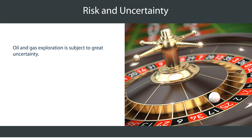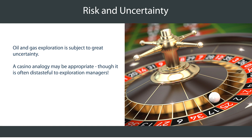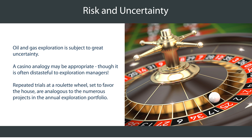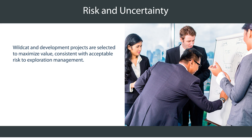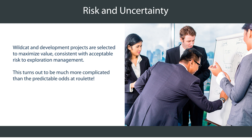Oil and gas exploration is subject to great uncertainty. A casino analogy may be appropriate, though it is often distasteful to exploration managers. Repeated trials at a roulette wheel set to favor the house are analogous to the numerous projects in the annual exploration portfolio. There are always more prospect opportunities available to exploration than there is capital to develop. Wildcat and development projects are selected to maximize value consistent with acceptable risk to exploration management. This turns out to be much more complicated than the predictable odds at roulette.